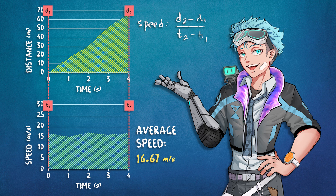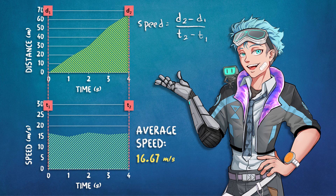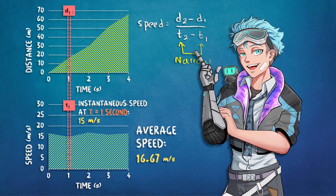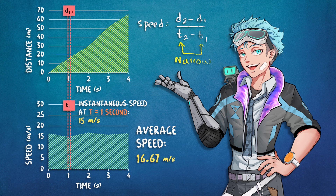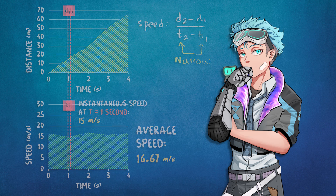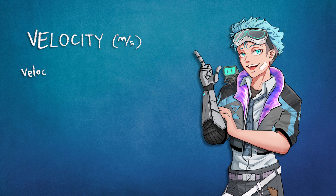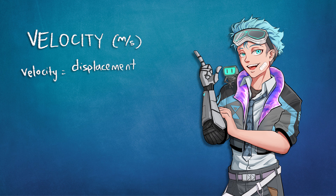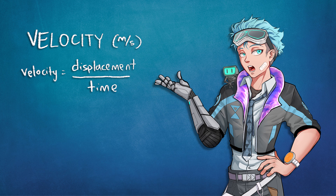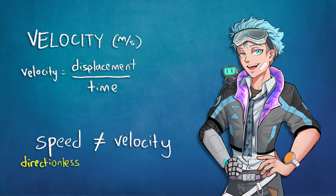To find its speed at a specific moment in time — otherwise called its instantaneous speed — you can narrow down the time period you use in the formula by as much as possible, as long as you know where the car was at the beginning and end of this period. Another quantity that's often preferable to speed is the velocity, which is defined by the displacement over time taken. That sounds just like speed, so what's the difference?